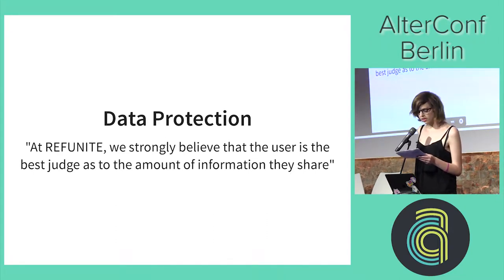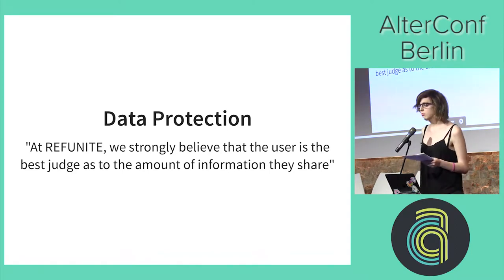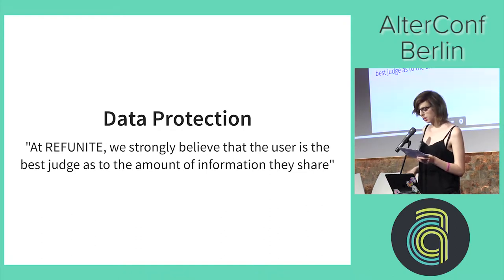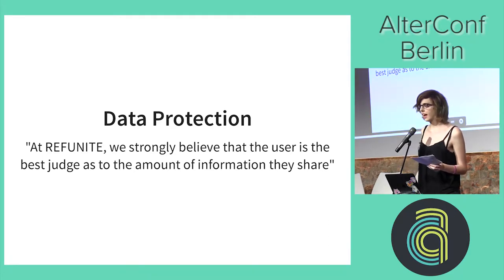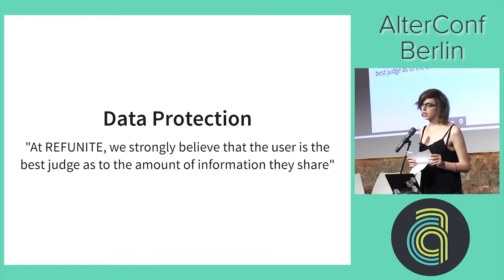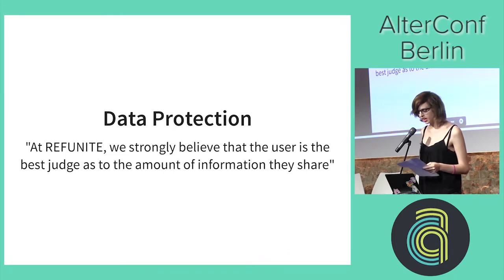I'm going to talk about some different areas of safety, but first I'm going to talk about data protection. A problem for marginalised people can be offline harassment, where people take data from stolen data sources but also public data sources, and they use that to collect as much information as they can about somebody, then use that to make their harassment more effective. To try and stop this, we need to be thinking about limiting the data we collect to what we really need.